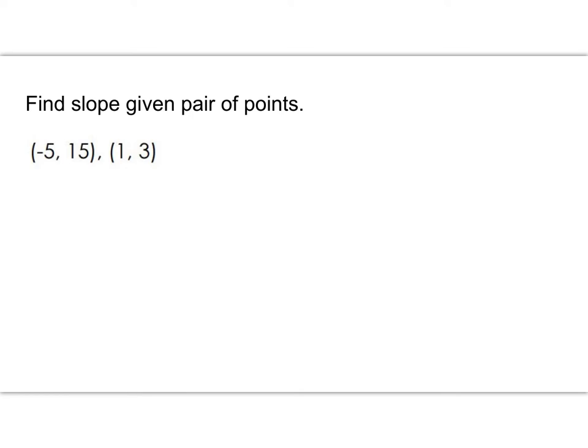One thing we should consider is labeling these. Remember, the first is always the x and the second is the y. We might want to label these as x1 and y1, and then we'll label the other point as x2 and y2. We do that just to ensure that we are finding the difference of these points the same. Remember when you're finding the slope, it's the change in y over the change in x.